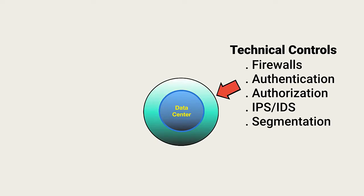Technical controls are used to control and monitor traffic. They're also used to control access. They include firewalls, logical access controls, IPS, and network segmentation design, as well as traffic control configurations for the network segments.